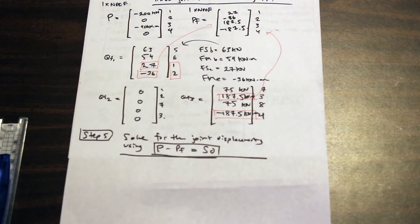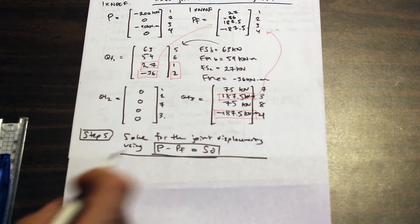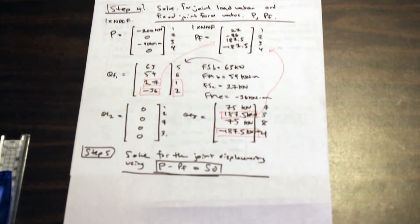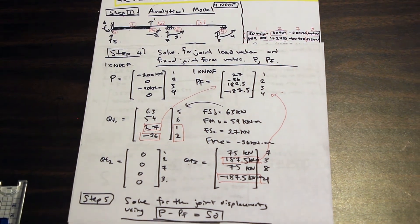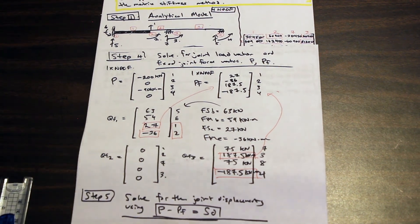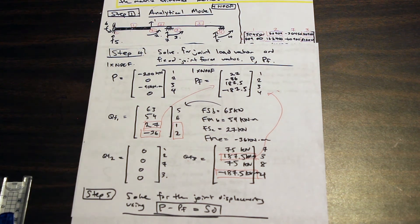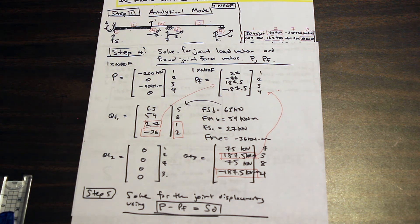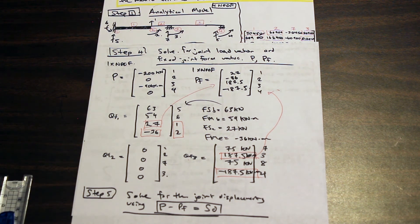Welcome back to part three of the matrix stiffness method. We're solving for a beam — it's a tricky question. We've gotten all the way to step five, solving for joint displacement using P minus PF equals SD. The rest of this question is super easy — it's literally just matrix operations in your calculator and writing out the reactions.